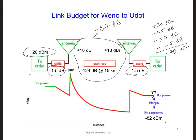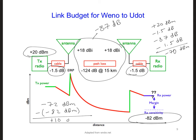Comparing this to the receiver sensitivity on U-dot of −82 dBm, we have a link margin of −70 dBm minus −82 dBm, which gives us +10 dB. This link meets the requirement that the received signal must be at least 10 dB higher than the minimum receiver sensitivity. In other words, this is a viable link.